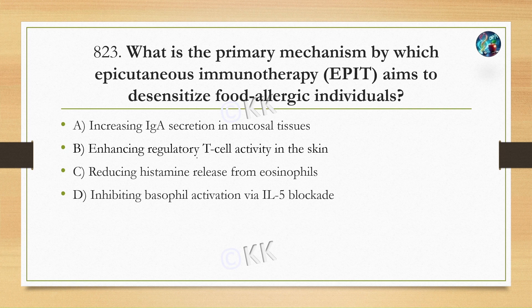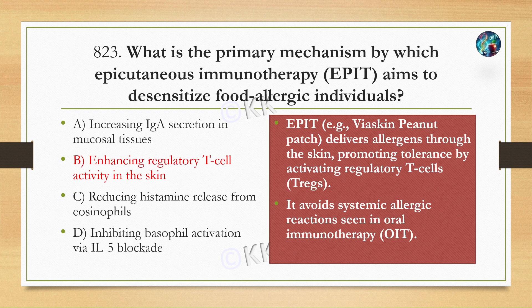Next question: what is the primary mechanism by which epicutaneous immune therapy aims to desensitize food-allergic individuals? Option A: increased IgA secretion in mucosal tissue. Option B: enhancing regulatory T-cell activity in skin. Option C: reducing histamine release from eosinophils. Option D: inhibiting basophil activation via interleukin-5 blockade. The correct option is B — enhancing regulatory T-cell activity in the skin.